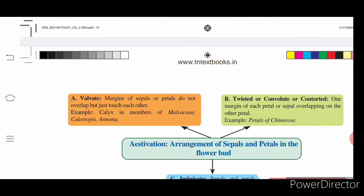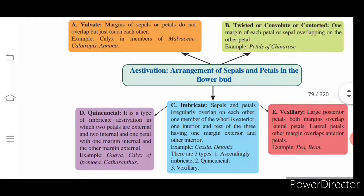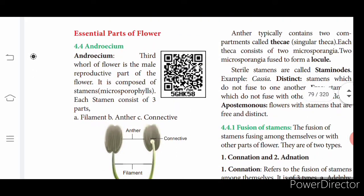Types of aestivation: Valvate — margins of sepals or petals do not overlap, lying next to each other. Twisted — one margin of the petal overlaps the next. Imbricate — sepals and petals overlap each other irregularly. Quincuncial — a type of imbricate aestivation where two petals are external and two are internal. Vexillary — the large posterior petal overlaps lateral petals on both margins, seen in legumes.